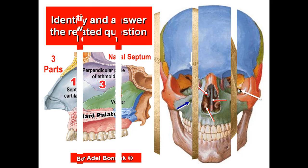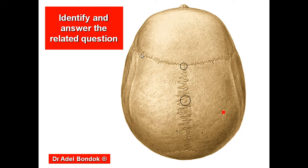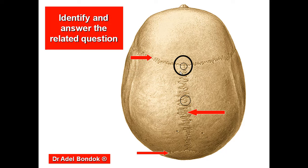This is the sagittal suture, this is the coronal suture, and this is the lambdoid suture. This area is the bregma — it is the meeting point between the coronal suture and the sagittal suture. In the newborn skull, this area is the anterior fontanelle.